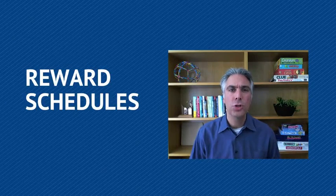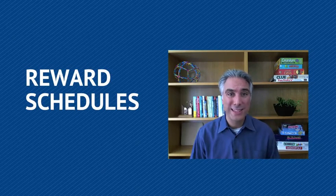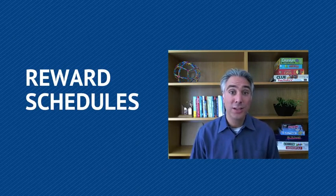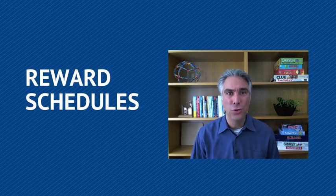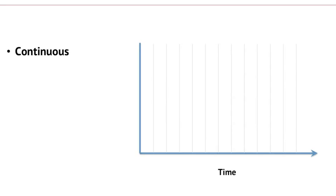Reward schedules refers to when the reward is offered, as opposed to what it is or what it's based on. Behavioral studies suggest that the structuring of reward schedules has significant implications for the psychological reaction that the rewards produce. There are several different possible reward schedules. The first one is the continuous reward — you get a reward each time. The reward is automatic; it goes for every instance of the action.